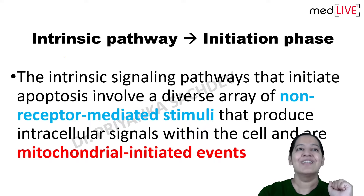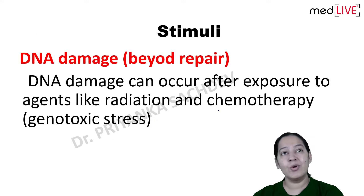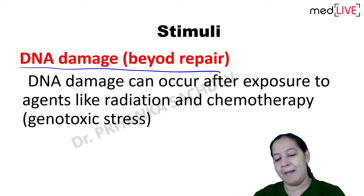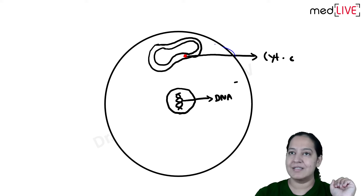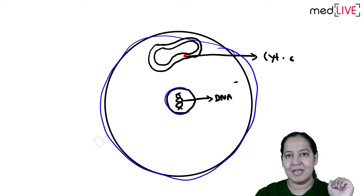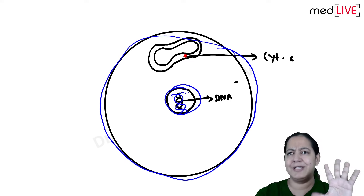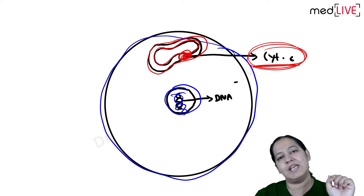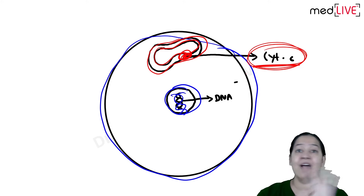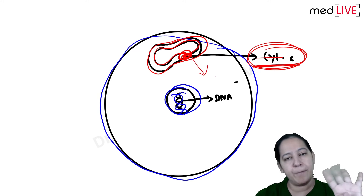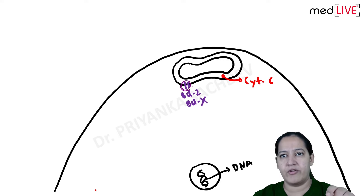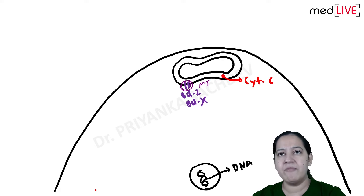Intrinsic pathway - initiation phase. It is called intrinsic because the stimulus comes from inside the cell, not from outside in the form of ligand. Here the stimulus comes from DNA damage. This is a cell with a nucleus, DNA inside the nucleus, and mitochondria. Between the two membranes of the mitochondria, a protein is present known as cytochrome C. It never comes out into the cytoplasm normally - if it does, apoptosis takes place.